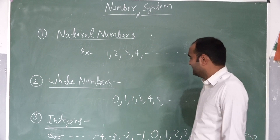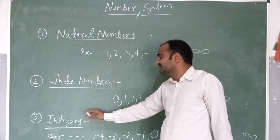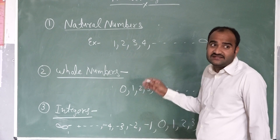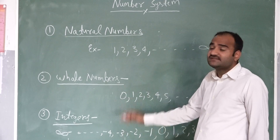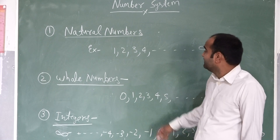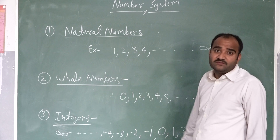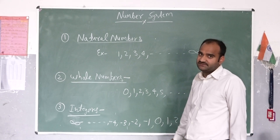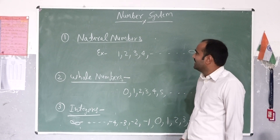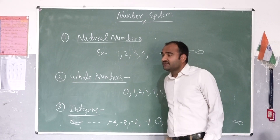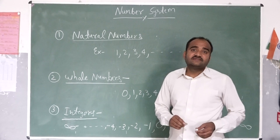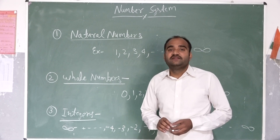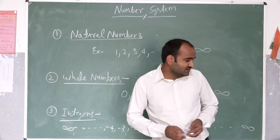Next is integers. Integers is the combination of negative numbers and whole numbers. After this, we will discuss what are rational numbers.